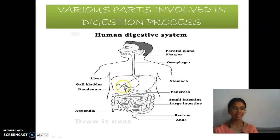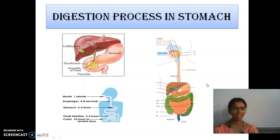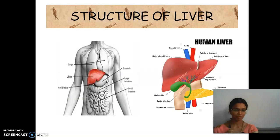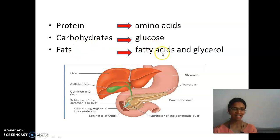The juices secreted by the liver are stored in the gallbladder and then supplied to the small intestine. The juices secreted by the pancreas are also given to the small intestine. With the help of these juices digestion takes place. At the end of digestion, proteins are converted into amino acids, carbohydrates into glucose, and fats into fatty acids and glycerol.